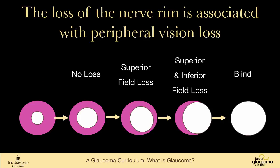There's a lot of redundancy in the optic nerve. There are over a million nerve fibers making up the optic nerve, and you can lose half of them and still have a normal visual field. As the patient continues to lose neuroretinal rim, visual field loss ensues. In this cartoon, the inferior temporal portion of this left optic nerve has gotten quite thin, and that may be reflected in superior nasal visual field loss. A nerve with both superior and inferior damage leads to a blind eye.